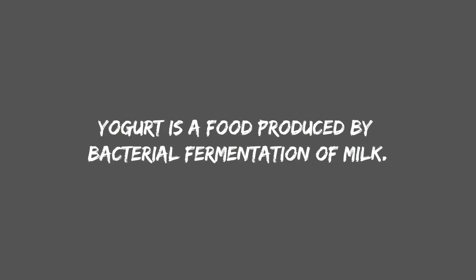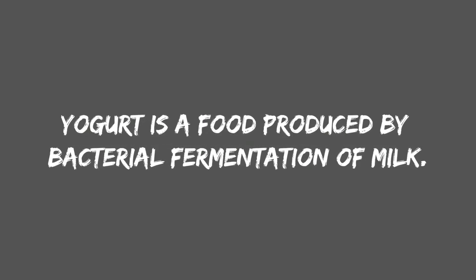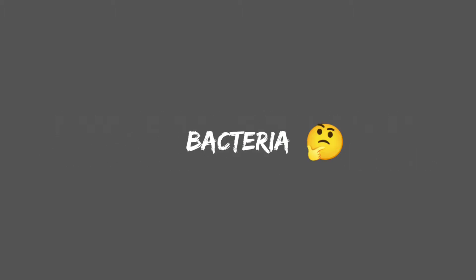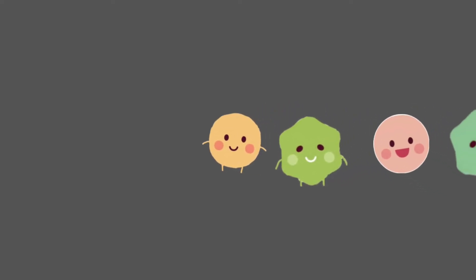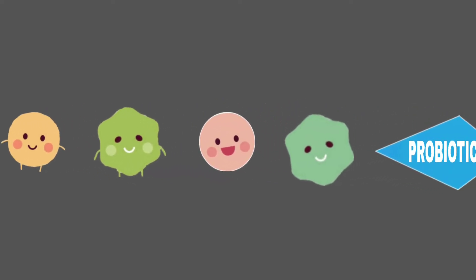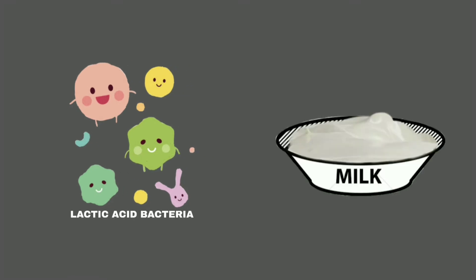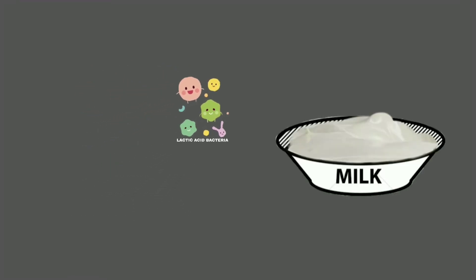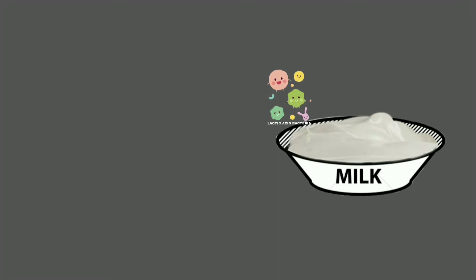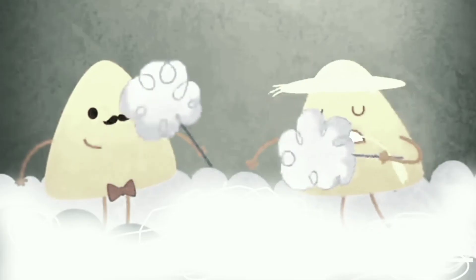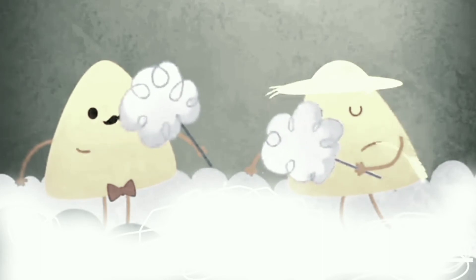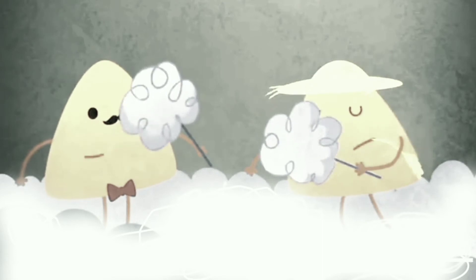Yogurt is a food produced by bacterial fermentation of milk. Yes, bacteria — but there's nothing to worry about, because these are good bacteria, which are often called probiotics. A specific group of bacteria called lactic acid bacteria are inoculated to the pasteurized milk to start a certain microbial activity. The role of this bacteria is to consume the main sugar in milk, which is the lactose, and then convert it into lactic acid. This process is called fermentation.